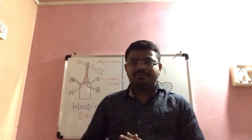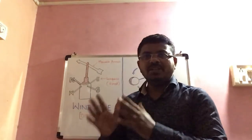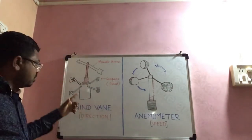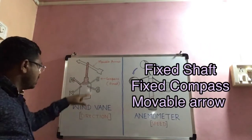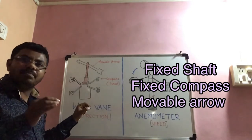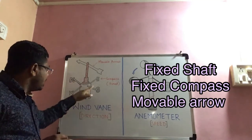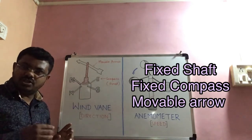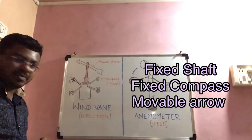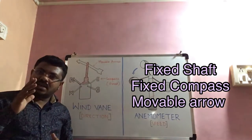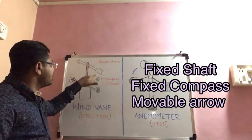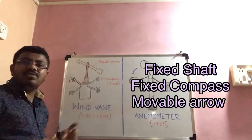Looking at the wind vane and how the instrument is placed — if you carefully observe this diagram, there is a shaft which is fixed at a place. There are four directions which the compass is showing: north, south, east, and west. The compass is also fixed, and then there is the arrow.